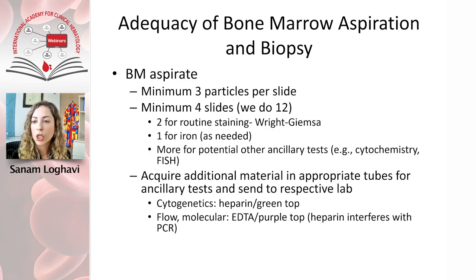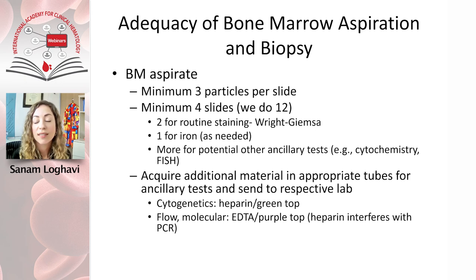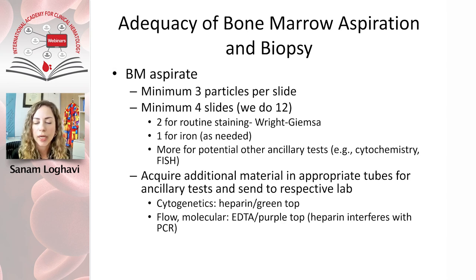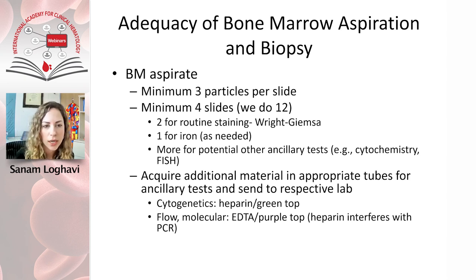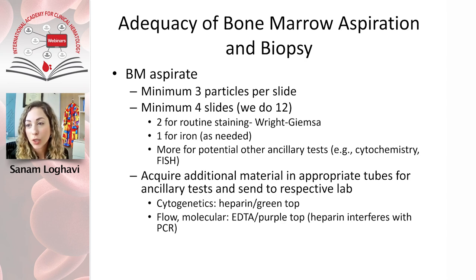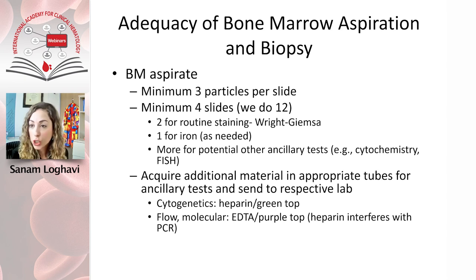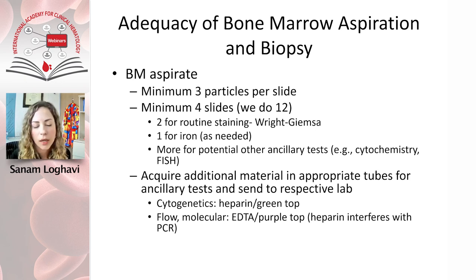Nothing good comes out of an inadequate sample. The bone marrow aspirate should have at minimum about three particles per slide. At our center, we make 12 slides of the aspirate but only stain four, keeping some for additional studies. You can do an iron stain on the aspirate, but you need good bone marrow representation with nucleated red cells — especially when evaluating for ring sideroblasts and storage iron. Otherwise the iron stain is not useful.